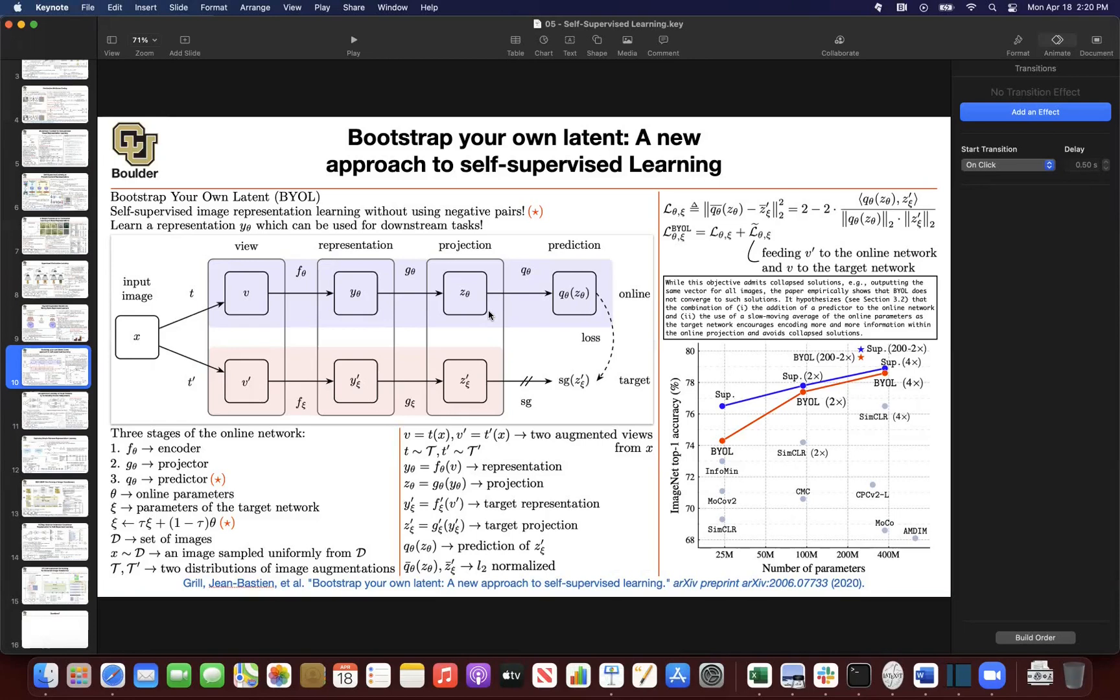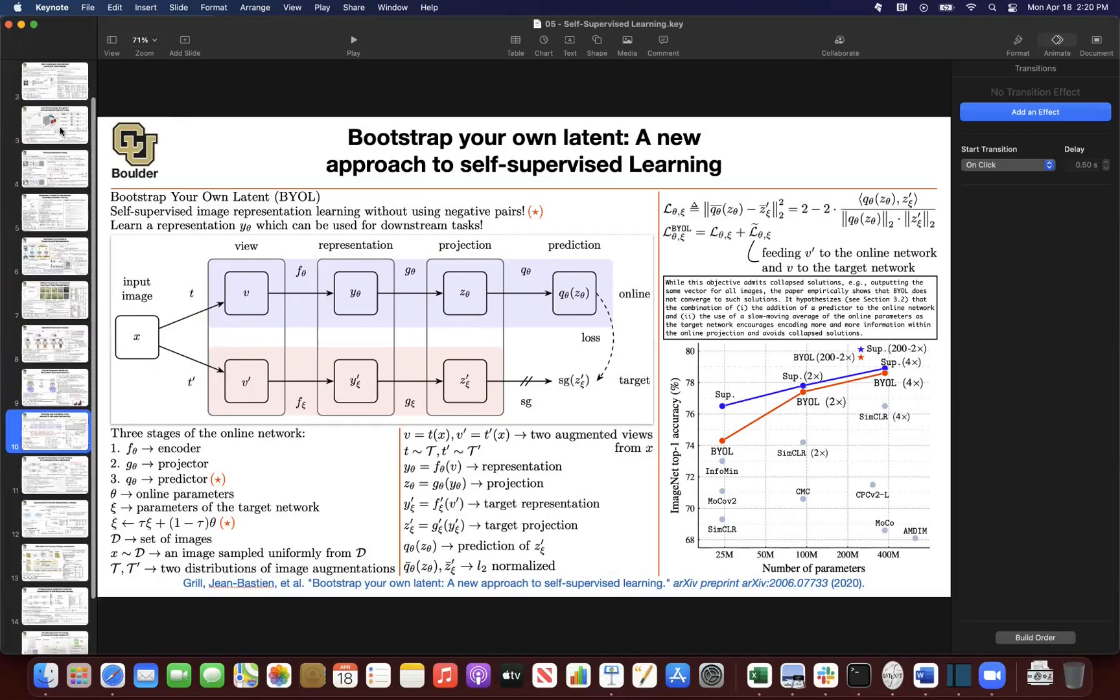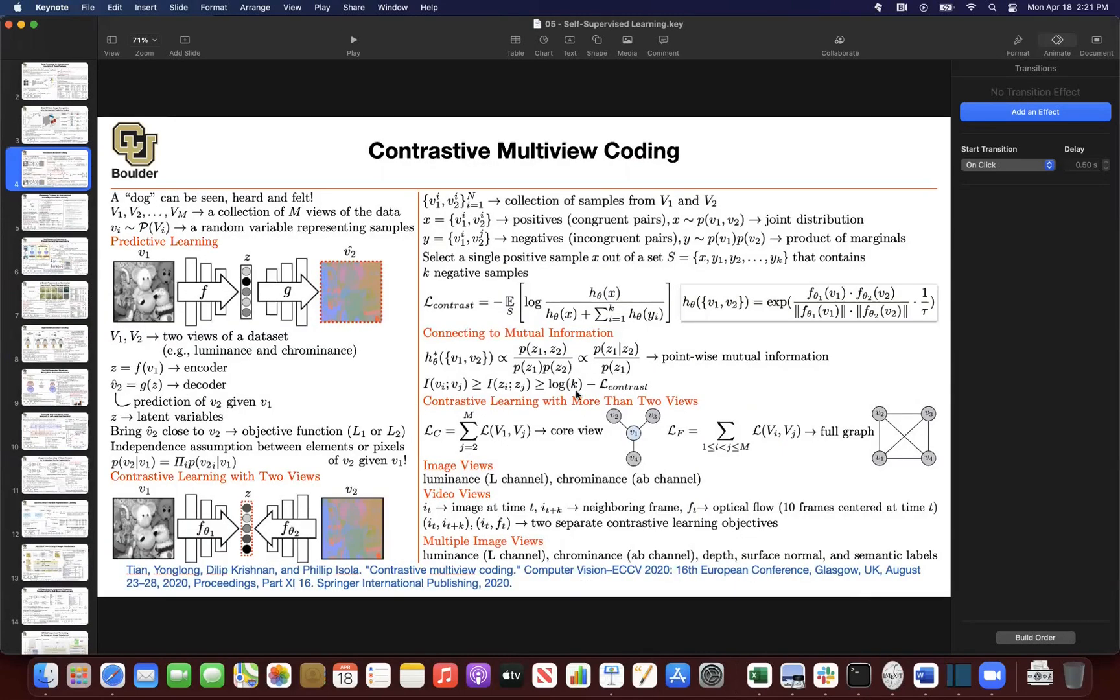I also had one more question. So in most of the contrastive learning settings, is there any theory about choosing how much negative samples should be used per positive sample or does it vary? I don't think there is much theory about it, but we saw a theory in here that the more samples you have, the more negative examples, this log term is going to be bigger.